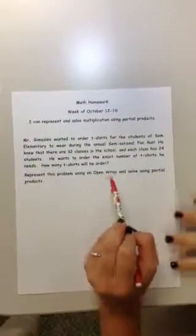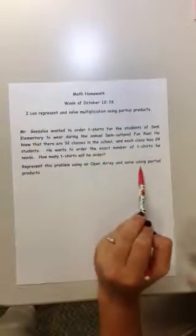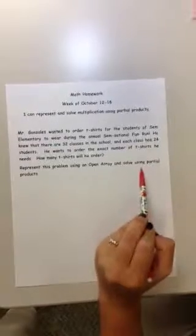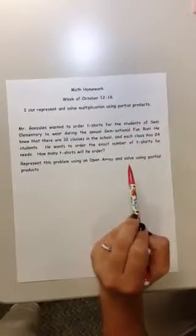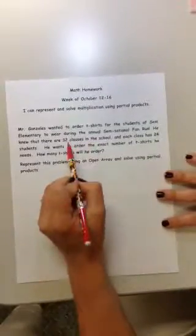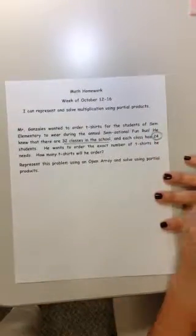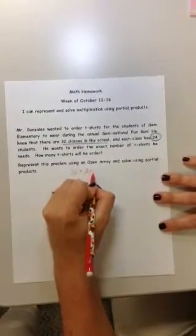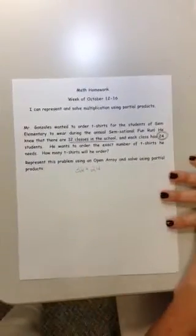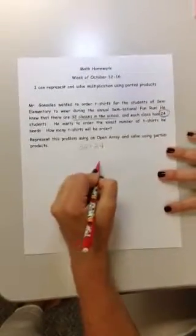So we've talked before about how open array is a great way to represent large multiplication, and if we break that large multiplication down, we get partial products that we can add together at the end to get our full product. So I know that there are 32 classes in the whole school, and that each classroom has 24 students. So that multiplication sentence is 32 times 24. I'm not very good at my 32 times tables or my 24s, so I'm going to break this down using an open array.